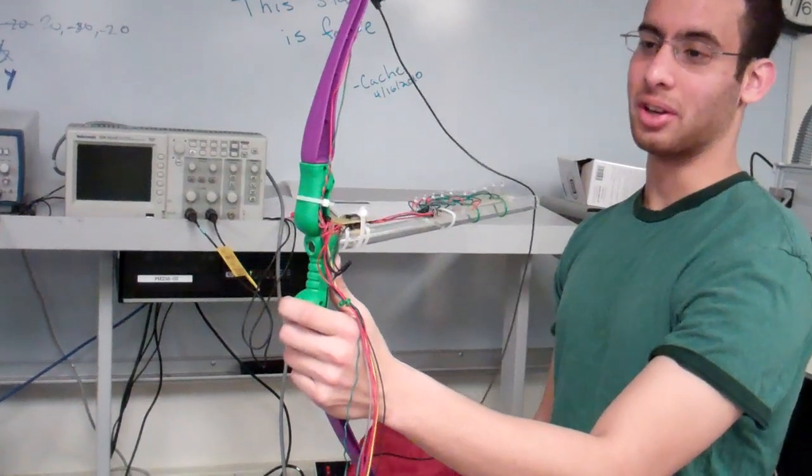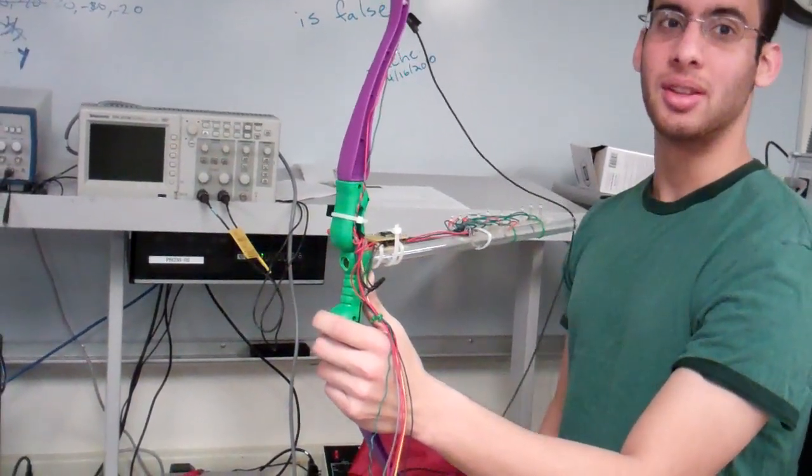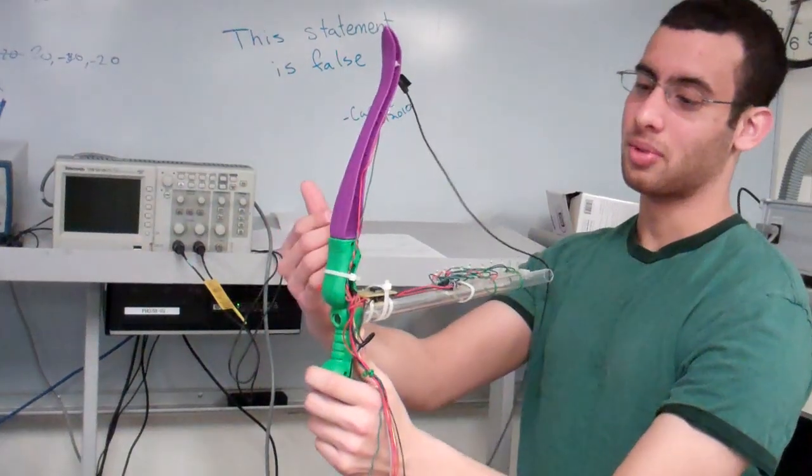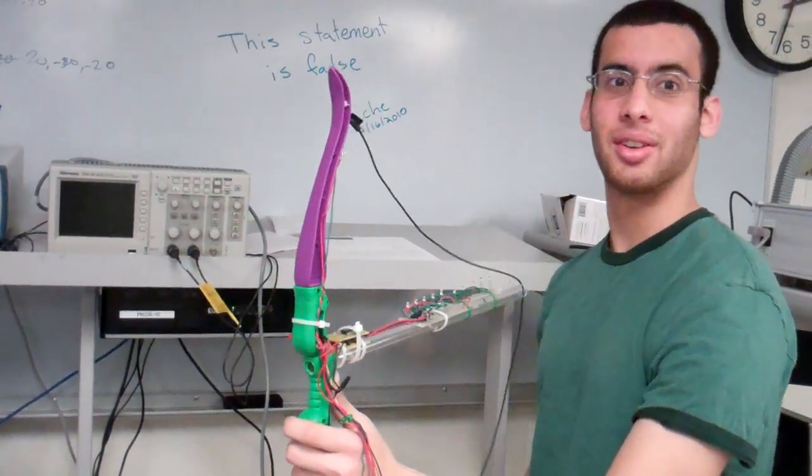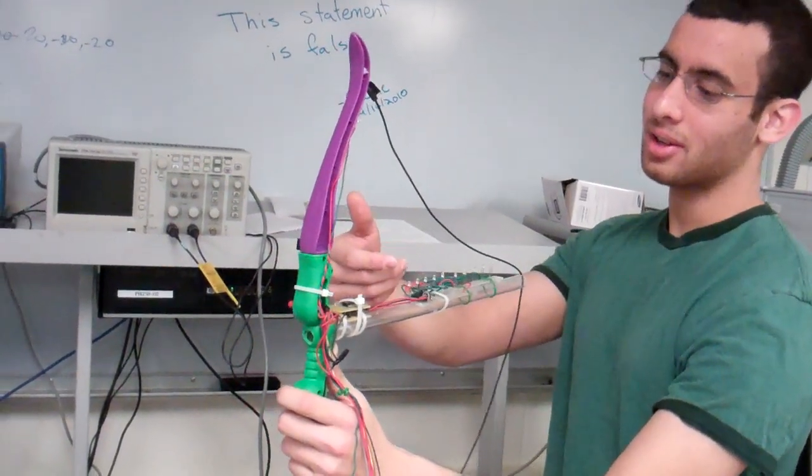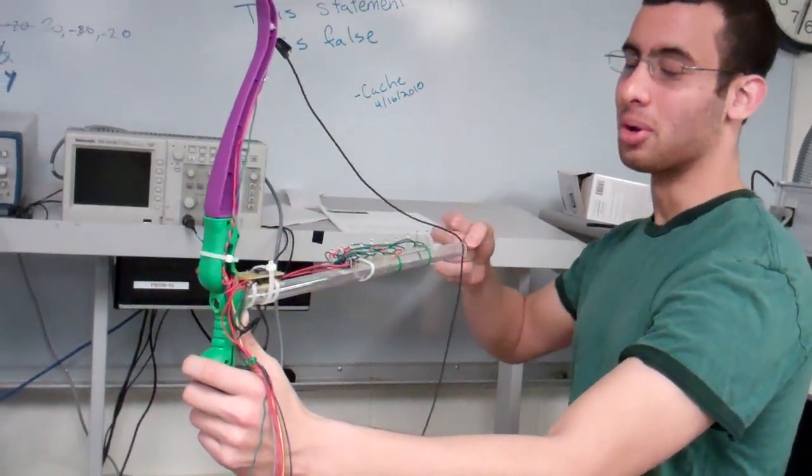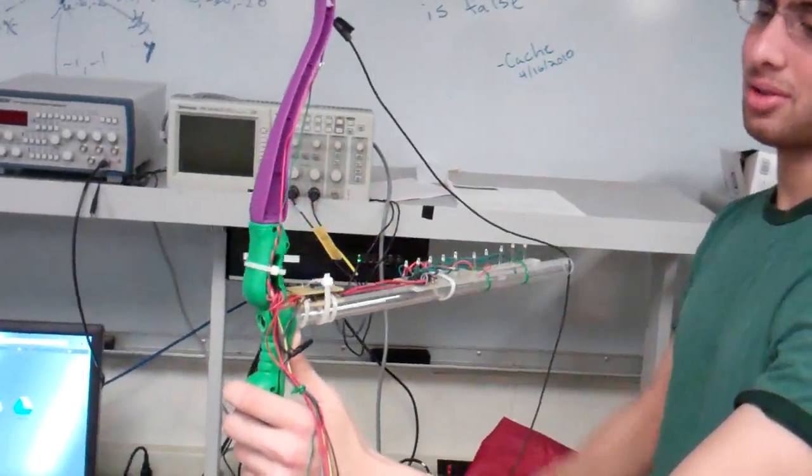So using basic physics, we can figure out, based on an average arrow speed and the distance and the height we picked, where the arrow would actually land on the target if there was a real arrow. And then the stretch sensor tells us when the bow has actually been drawn and when the bow has been released.